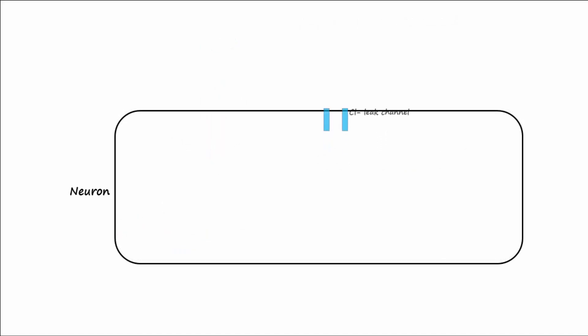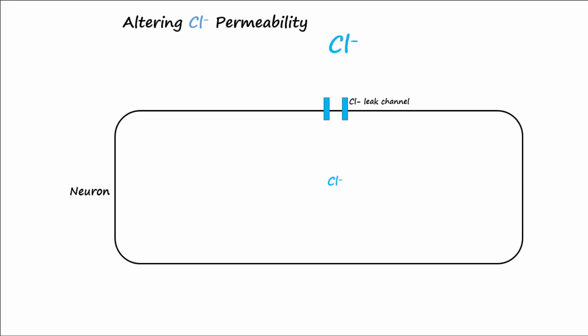What if leak channels for chloride ions were added to the membrane, or the cell membrane became more permeable to chloride ions? First determine where chloride is highest so you can tell which direction it would diffuse. It's higher outside, so it would go down its concentration gradient and come into the cell.